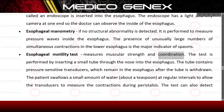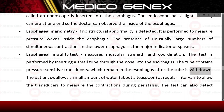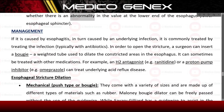The esophageal motility test measures muscular strength and coordination. It is performed by inserting a small tube through the nose into the esophagus; the tube contains pressure-sensitive transducers. The patient swallows about a teaspoon of water at regular intervals, allowing the transducers to measure contractions during peristalsis. The test can also detect abnormality in the lower esophageal sphincter.